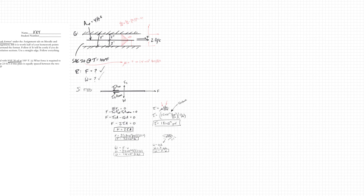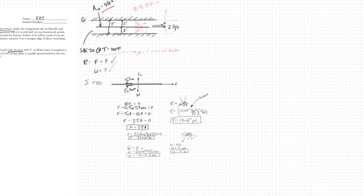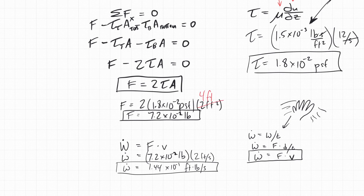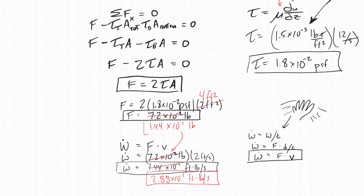Oh wait — I made an error. The area was four square feet, but I plugged in two. Let's fix that: with four feet squared, the force changes from 7.2×10⁻¹ to 1.44 times 10 to the negative 1 pounds. Plugging that in, the rate of work becomes 2.88 times 10 to the negative 1 foot-pounds per second. My apologies — errata. I'll re-upload this video. Alright, bye.